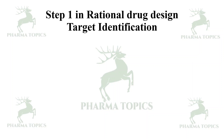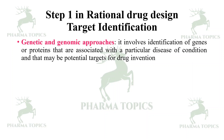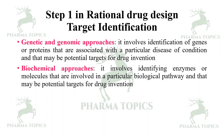The first step in rational drug design is target identification. Genetic and genomic approaches involve identification of genes or proteins associated with a particular disease or condition that may be potential targets for drug intervention. Biochemical approaches involve identifying enzymes or biomolecules involved in a particular biological pathway that can be potential targets for drug intervention.